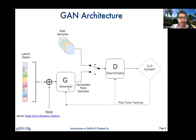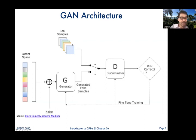The generator's task is to produce samples that look very much like the real thing. The discriminator compares these generated samples to real samples — in this case, real faces — and decides: this is fake or this is real. If it's fake, the generator has to try harder to produce better examples that the discriminator can no longer distinguish.